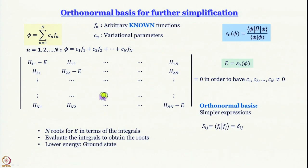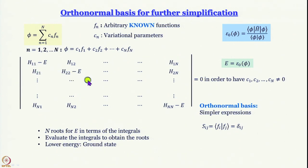The secular determinant becomes h₁₁−E, h₁₂, h₁₃, … h₁ₙ in the first row, and so on. Can we say h₁₂ and h₂₁ are zero? Actually, we cannot — that is not the general case, and we will encounter situations where they are zero, but it must be proven.